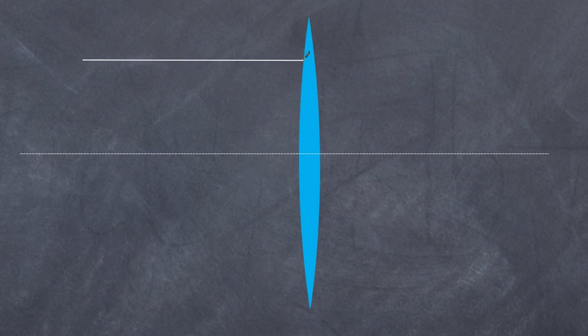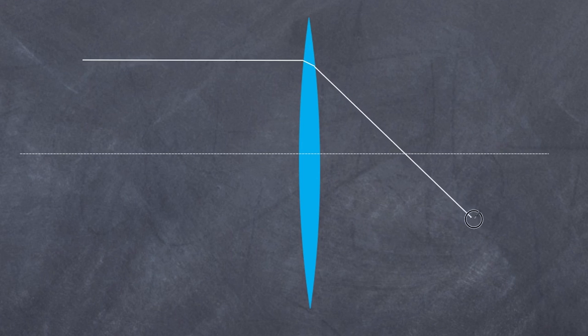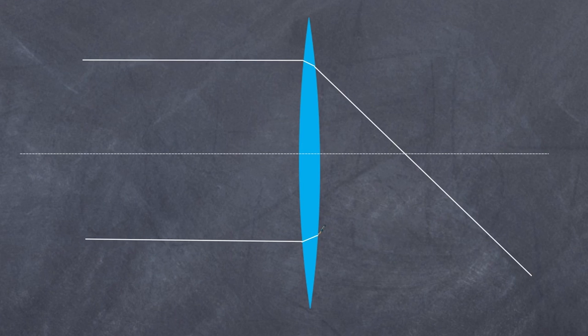A lens like this converges light rays. If I have a light ray running parallel and it hits the side here, it's going to refract — once as it enters the medium and once as it leaves. Because the angles are different on either side, the light ray is going to continue to bend to a particular position. Similarly, a light ray on the other side that is parallel will also refract, bending towards the normal then away, and so these light rays are converging to a point.